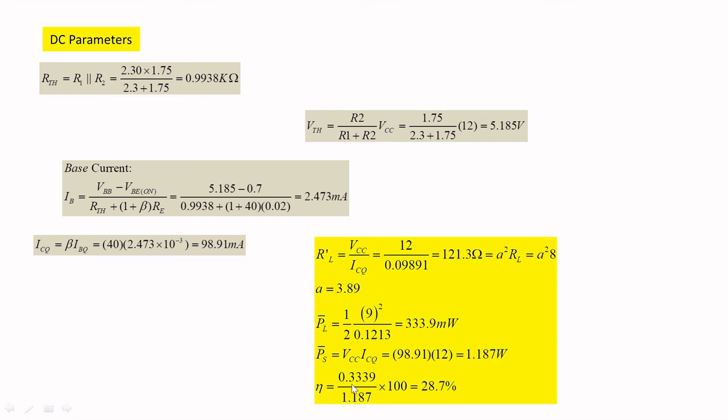So, load power is 333.9 milliwatts and source power is 1.187W. Efficiency will be 0.3339 divided by 1.187 times 100, you will be getting 28.7 percent.